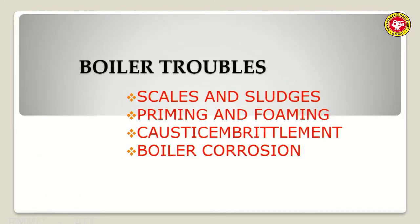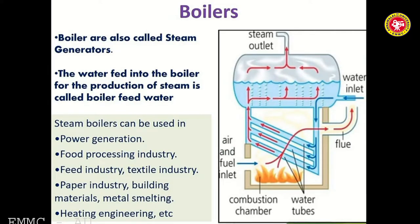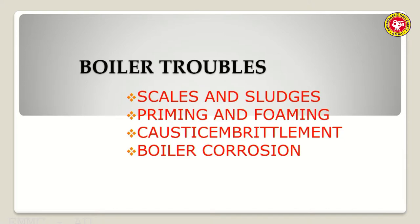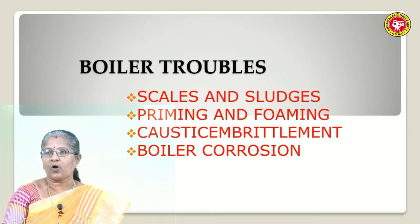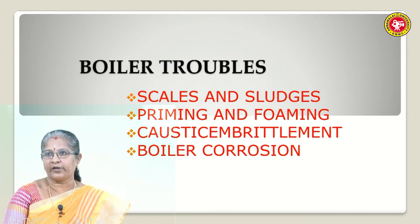These problems are called boiler troubles. Boilers use liters and liters of water; when boiled, steam is produced and used for power generation, food processing, textile industries, paper industry, etc. When hard water is continuously used in a boiler for steam generation, the salts deposit on the inner surface and cause many troubles. The four main boiler troubles are: formation of scales and sludges, priming and foaming, caustic embrittlement, and boiler corrosion.